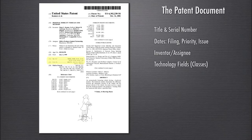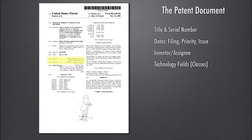Every patent is classified according to various technology fields. The PTO has an entire division dedicated to this, and the classification is found on the cover with letter and number designations for different technologies. This aids primarily in searching for prior art. If the PTO is looking for relevant prior art related to your invention, they can look in a similar class of technologies to find the right information.